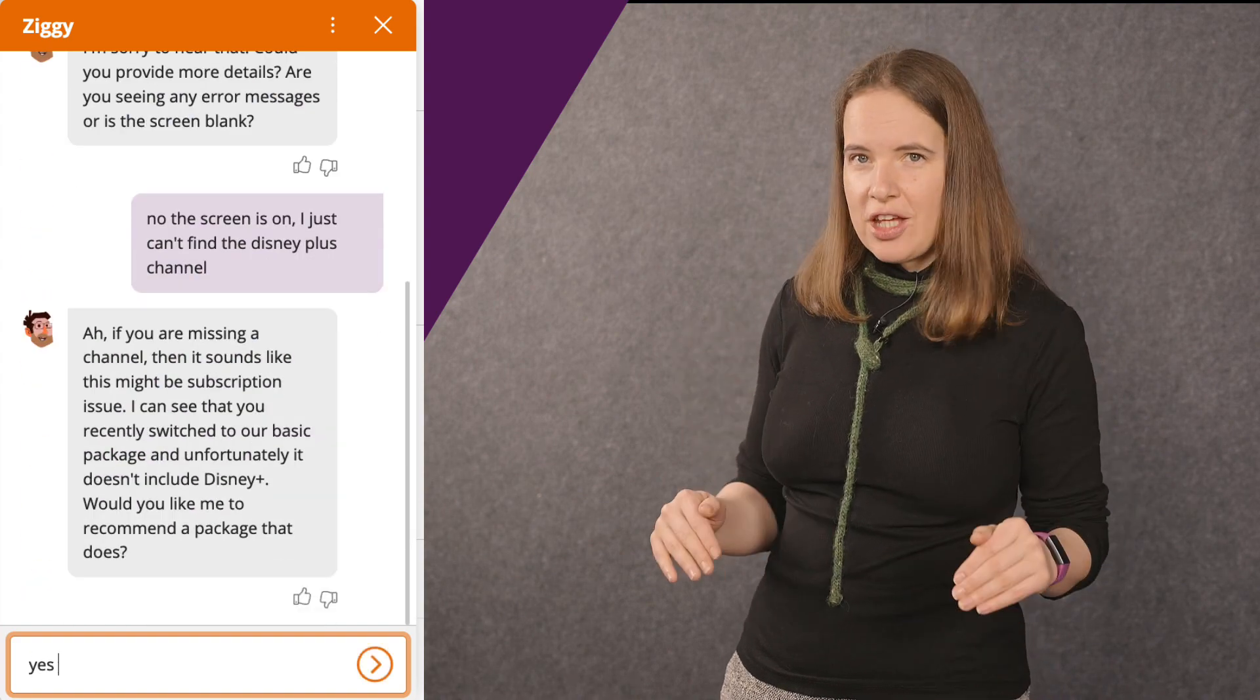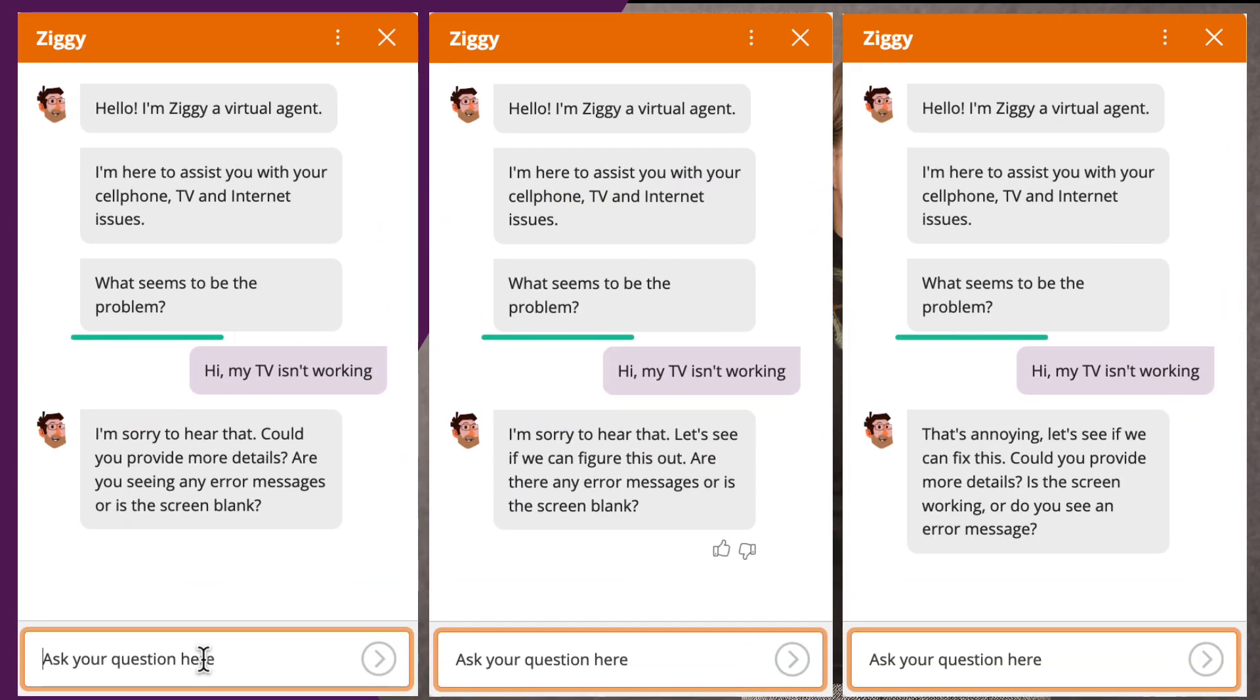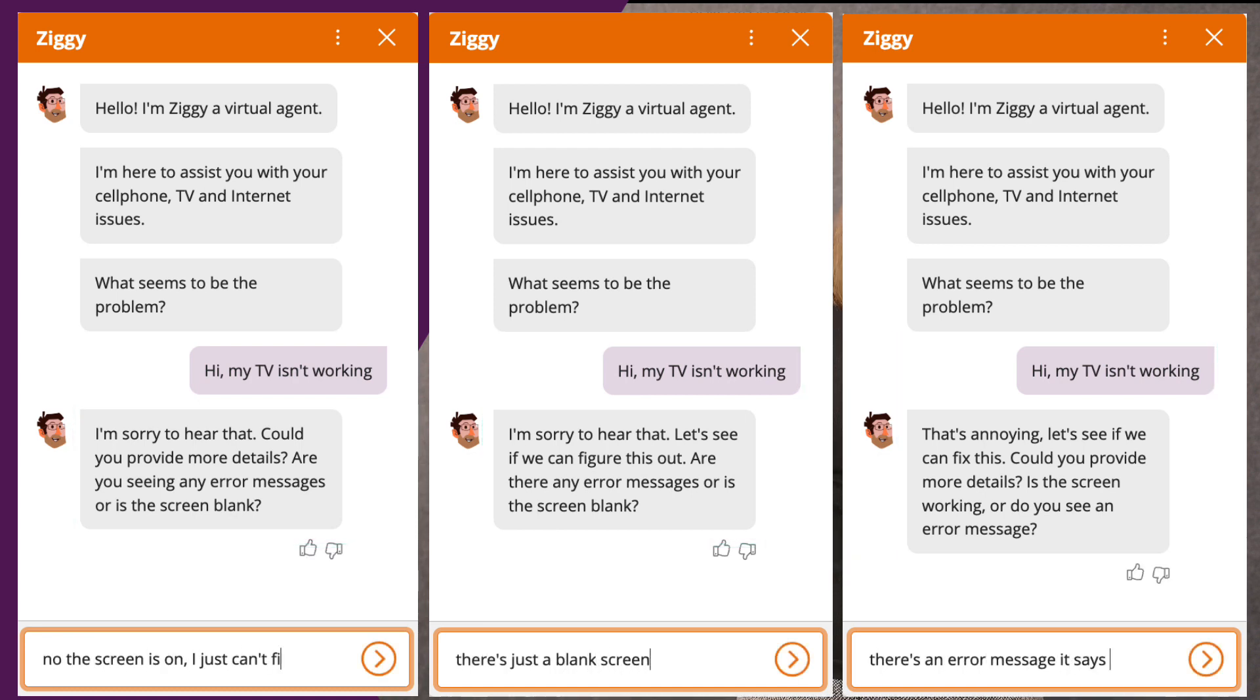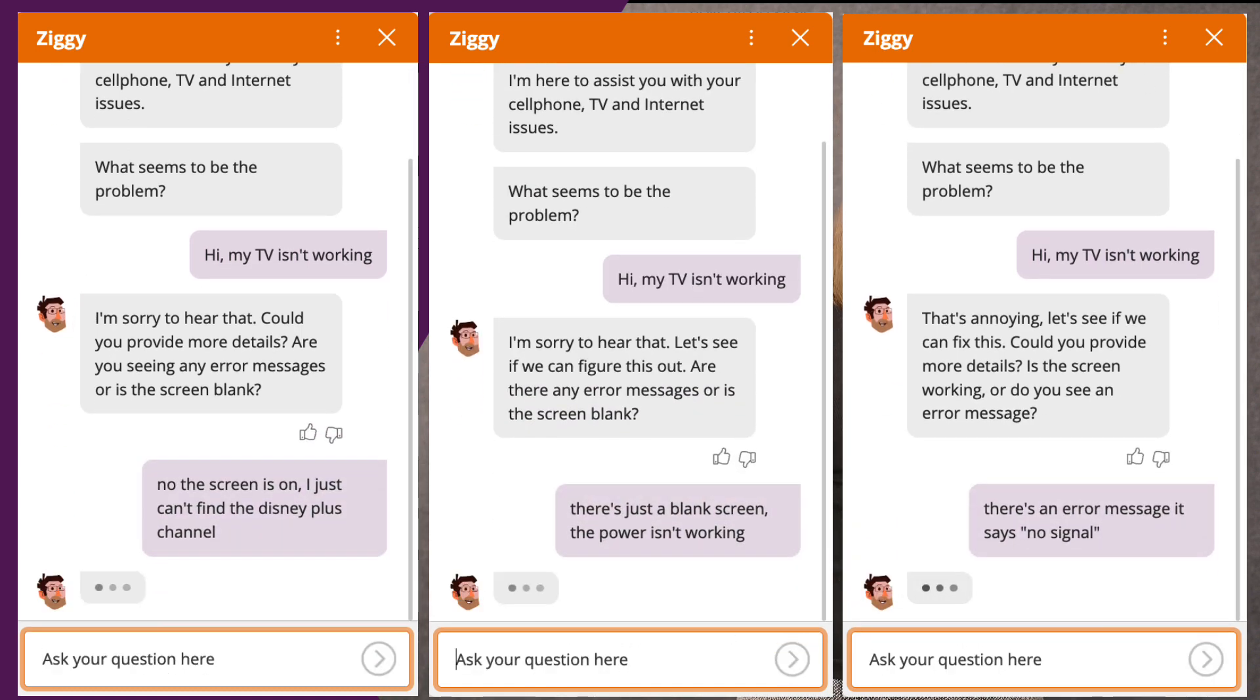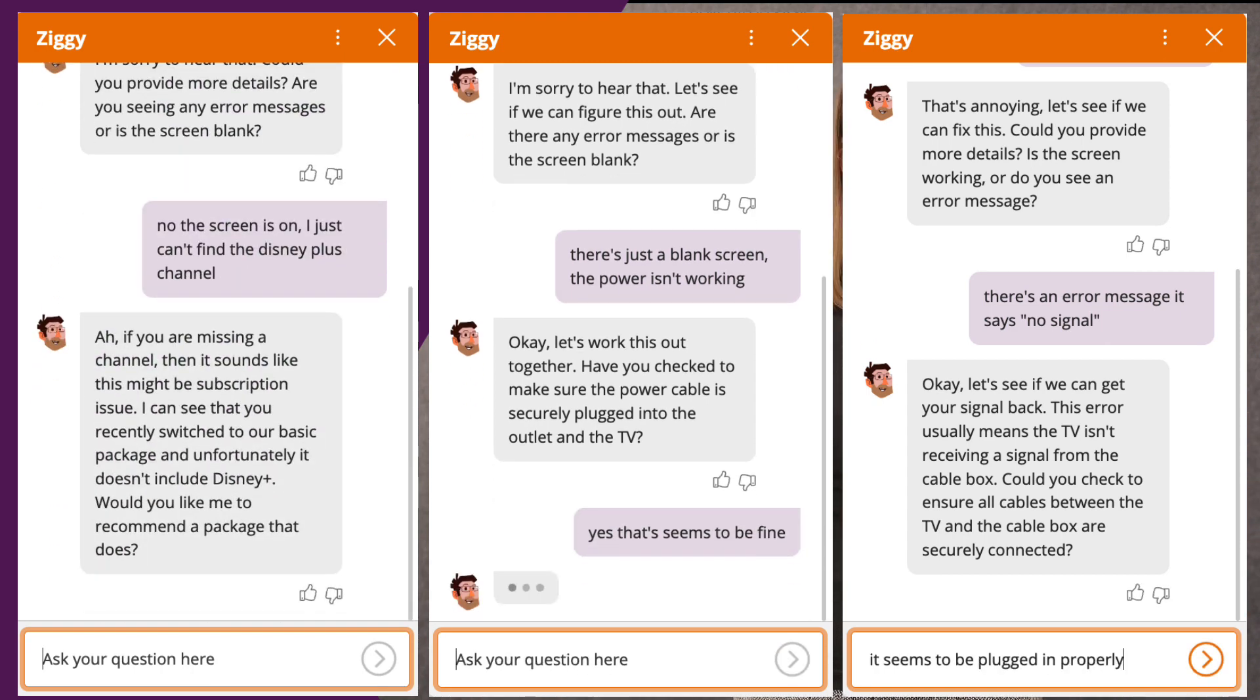To get to the root of the issue, the VA and the user have to go back and forth a few times. We can have many different conversations that start the same way with the same question. Then depending on what the user says next, the conversations evolve differently.